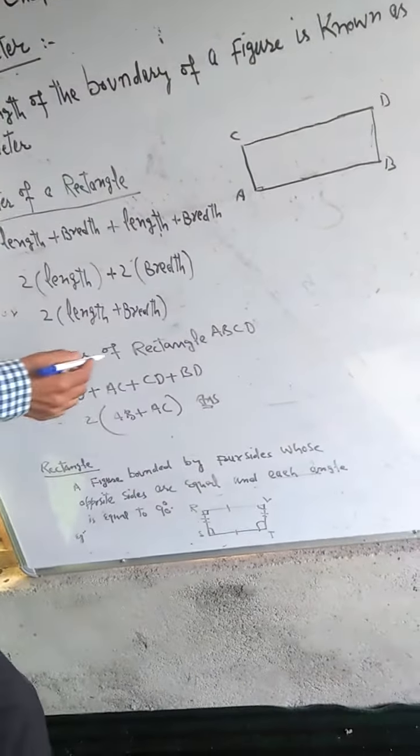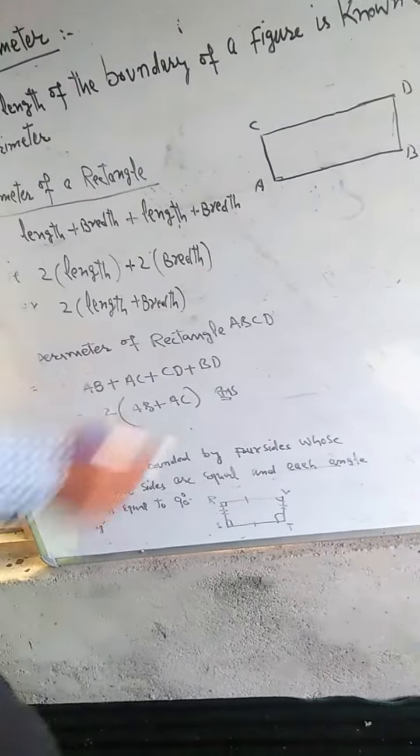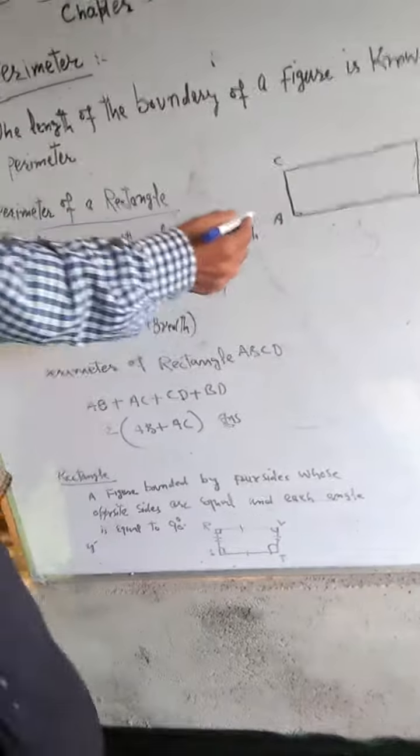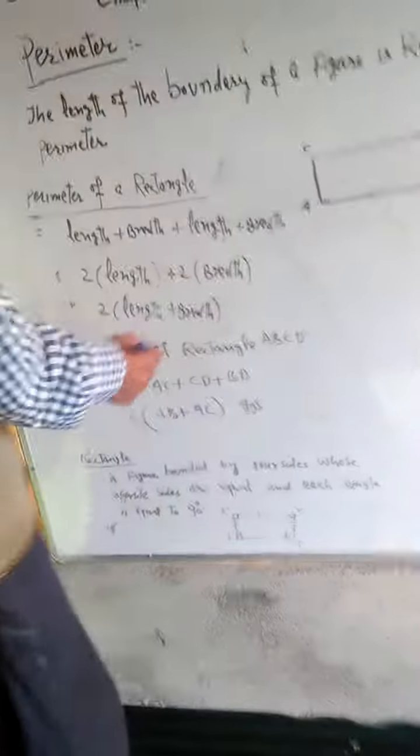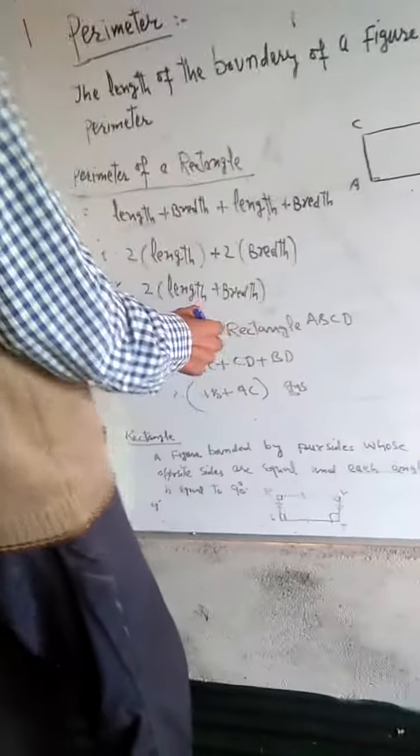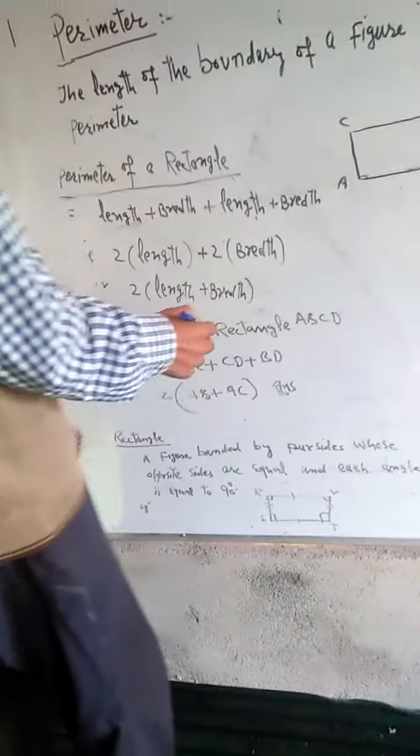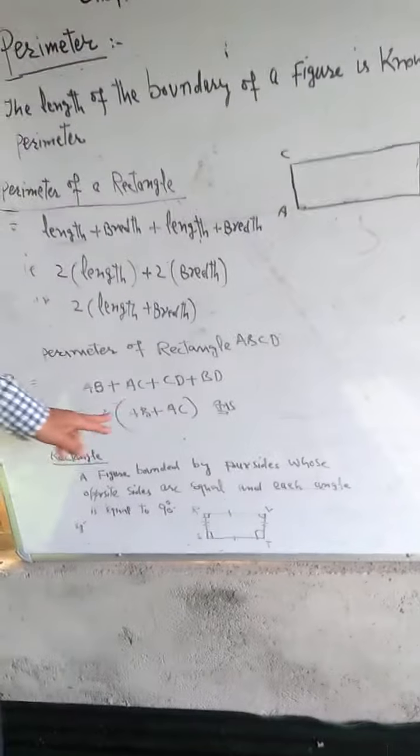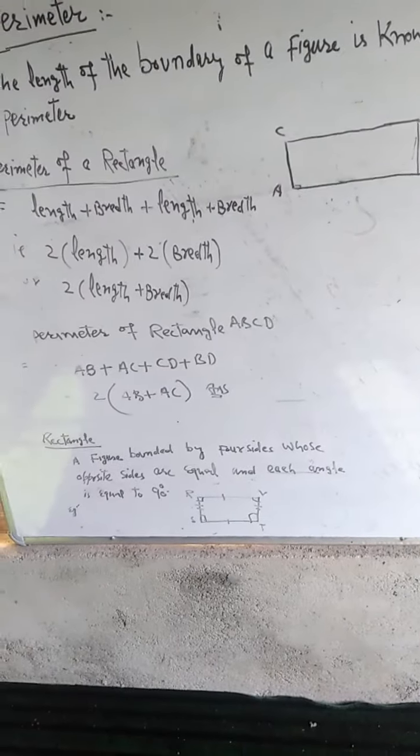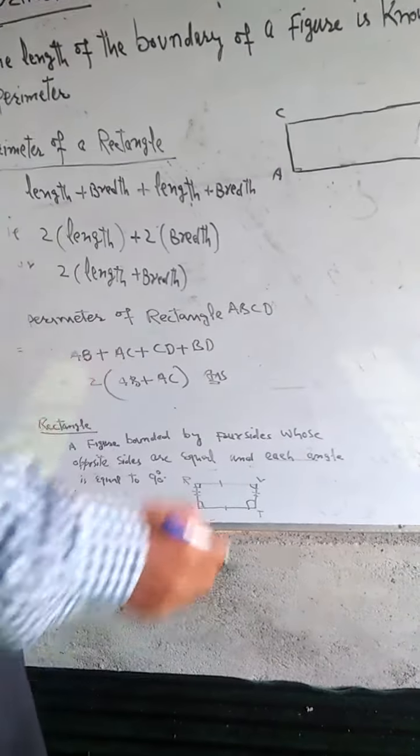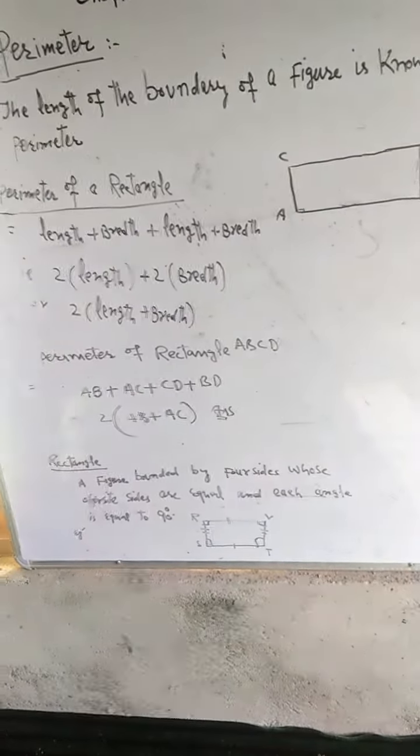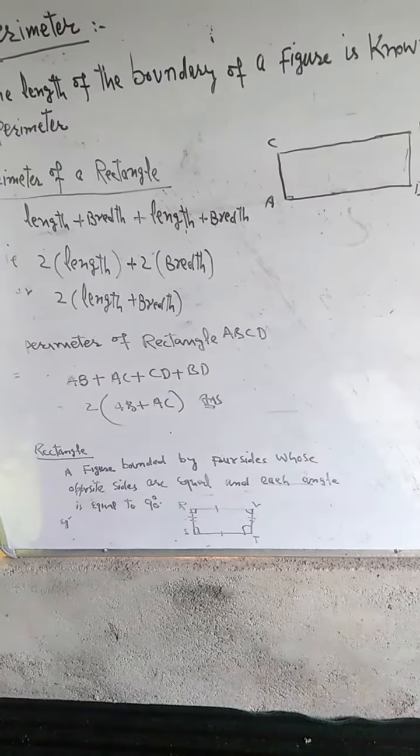Perimeter of rectangle ABCD. The longer dimension is called length and the shorter is called breadth.